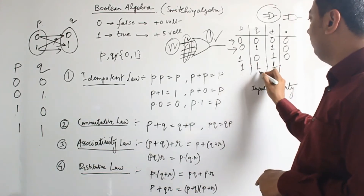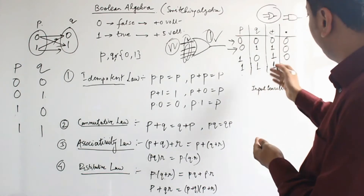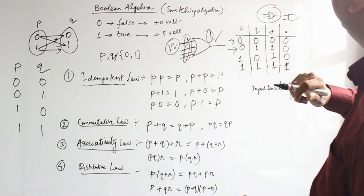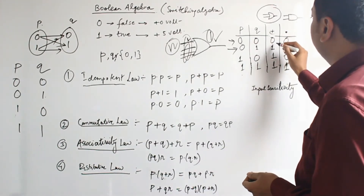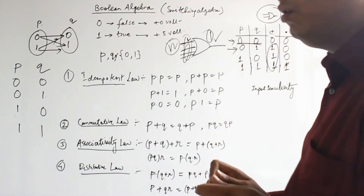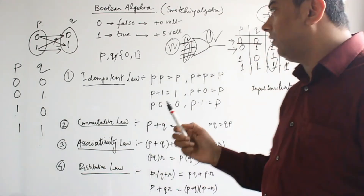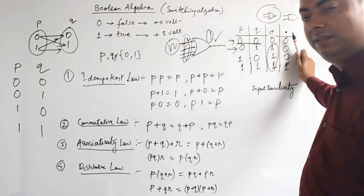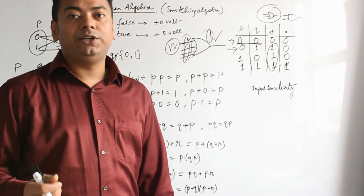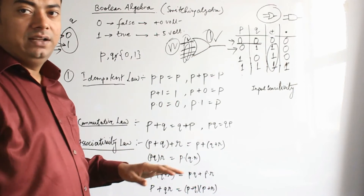For (1,1) — found 1, check next variable also 1, no more variables left, no 0 found, so output is 1. Remember: the OR gate output is always 1 except when all variables are 0 — if all are false, output is false. For AND, if all are true then only output is true. There is also a principle of duality, which is very unique — we'll discuss it later.